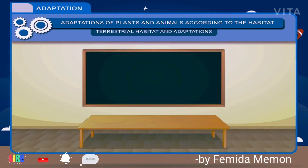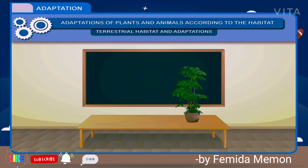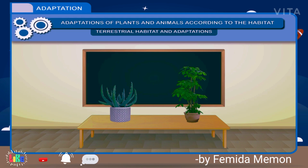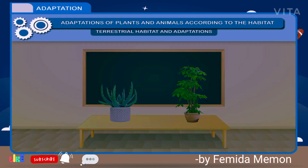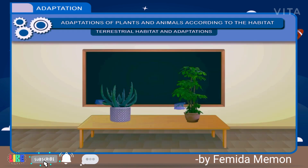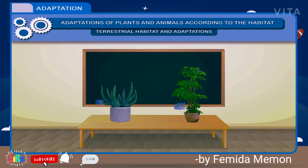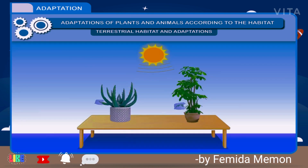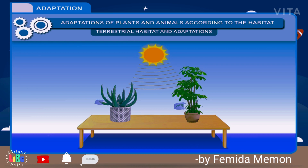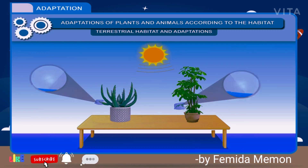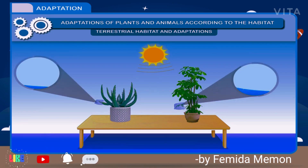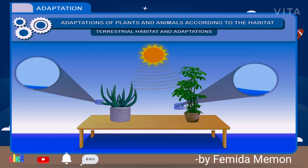Activity: Bring a potted cactus and a leafy plant into the classroom. Tie polythene bags to some parts of the two plants. Place them in the sun and observe after a few hours. What do you see? Do you notice any difference in the amount of water collected on the two polythene bags?